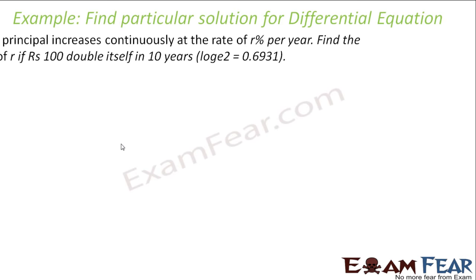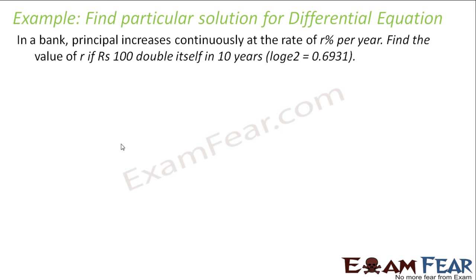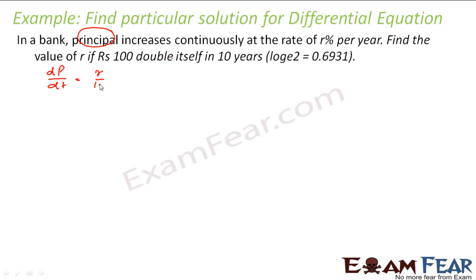Let us take one more question. In a bank, the principal increases continuously at the rate of r percent per year. If p is the principal, then dp/dt = r/100 · p.